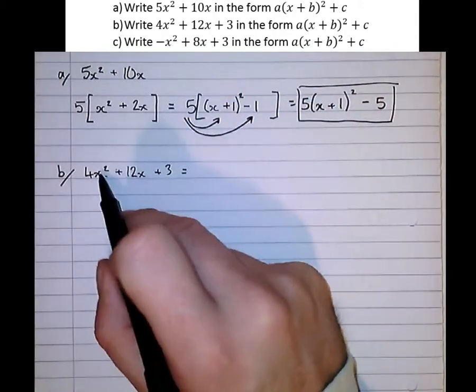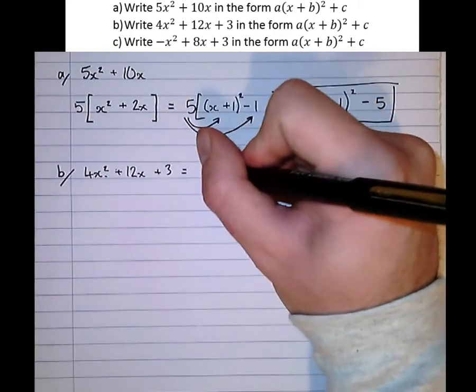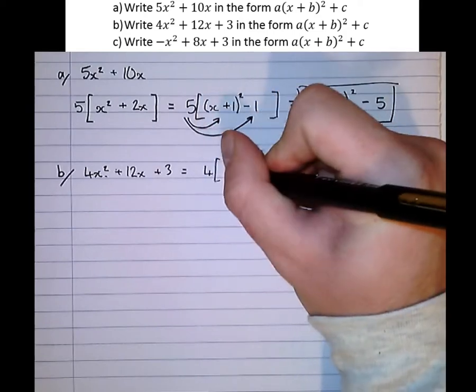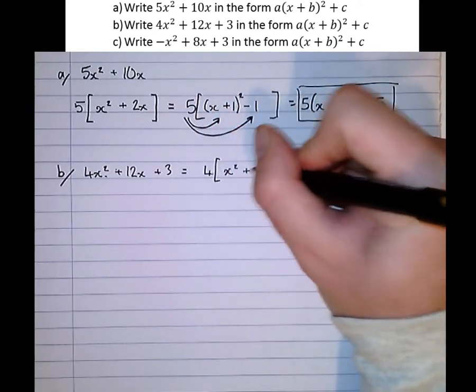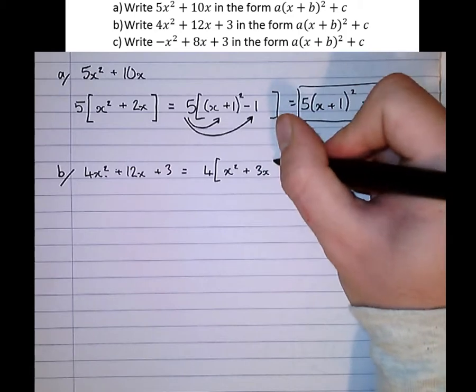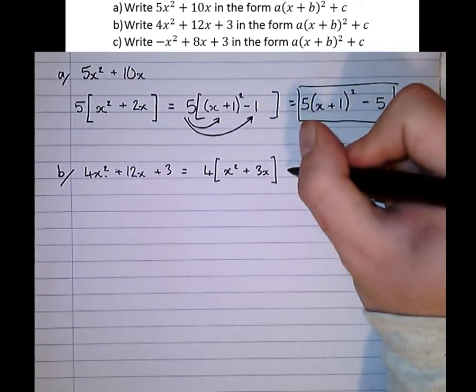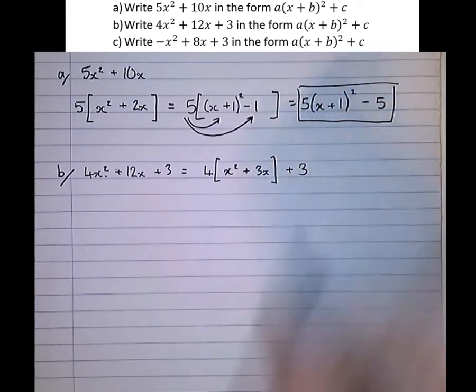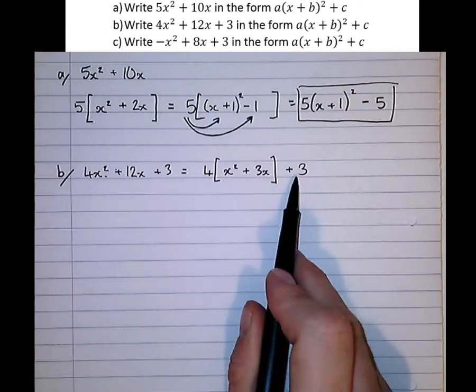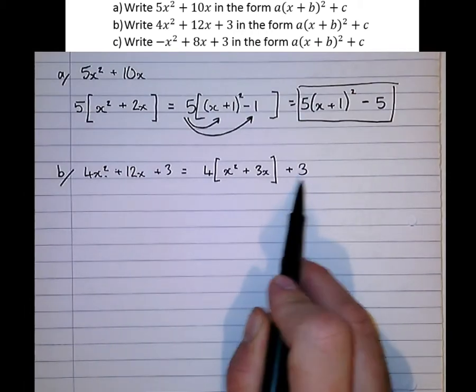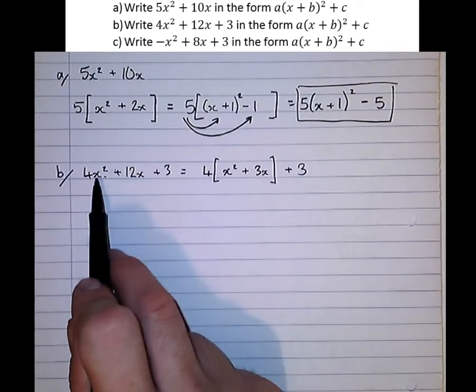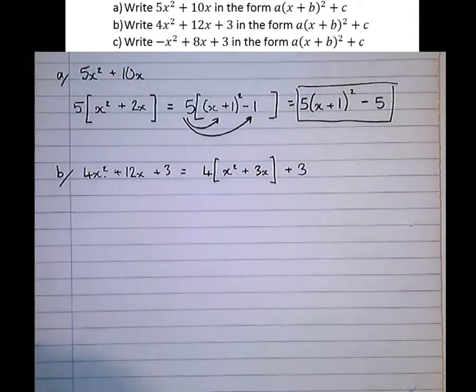let's take out a factor of 4. Let's get the coefficient of this x squared term to be 1. x squared plus 3x close bracket plus 3. It's important we leave this plus 3 out. It just makes the question a lot easier. Just take the first two terms when factorised.